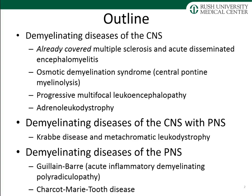I'll discuss osmotic demyelination syndrome, progressive multifocal leukoencephalopathy, and adrenal leukodystrophy. I'll then cover two diseases that involve demyelination of both the central and peripheral nervous system: Krabbe disease and metachromatic leukodystrophy. Finally, I'll finish with two demyelinating diseases of the peripheral nervous system — Guillain-Barré and Charcot-Marie-Tooth.